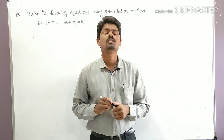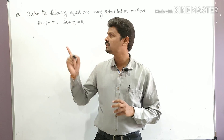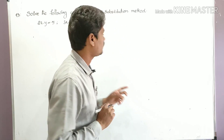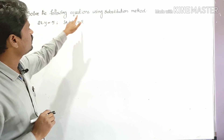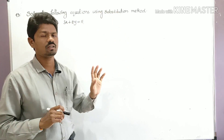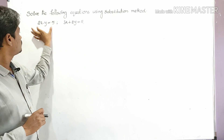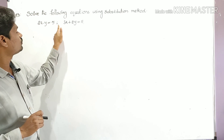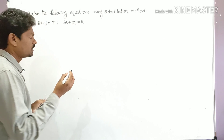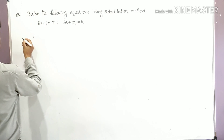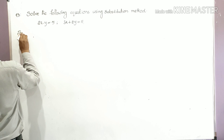The given question asks us to solve the following equations using the substitution method. The two equations are: equation one — two x minus y is equal to five, and equation two — three x plus two y is equal to eleven. Let's see how we can find the solution.